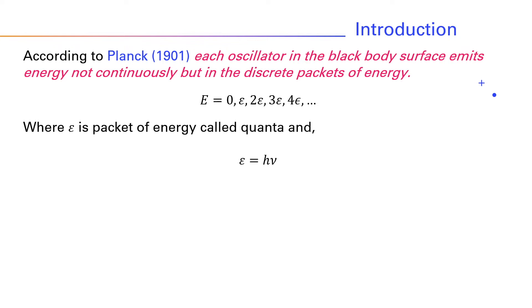And epsilon is equal to hν, where h is called Planck's constant, having value 6.625 × 10^-34 joule second. This is called quantization of energy.